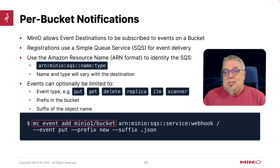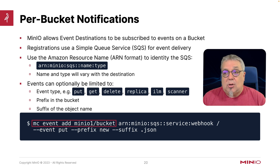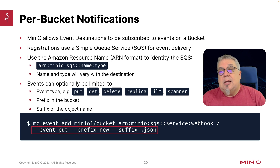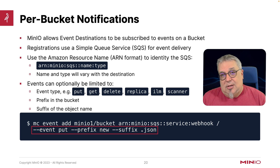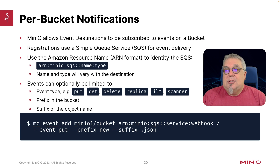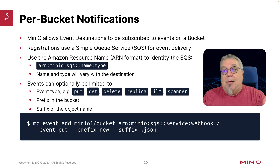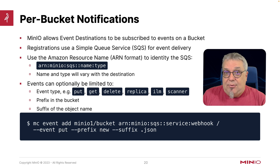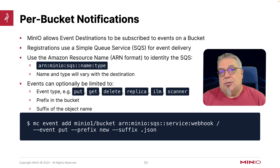So there's MC event add — this is on a bucket on minio1 called bucket, and I'm just using that webhook that I just registered. I'm going to look for events that have a prefix of 'new' and a suffix of 'json'. So once I've done that and I start uploading objects to that bucket with a .json suffix and in the 'new' prefix, I will start seeing events.